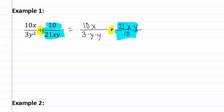We can now reduce. There is a ten in both the numerator and the denominator. There is also a y in both the numerator and the denominator. If I look at twenty-one and three, I know that three goes into twenty-one seven times and three goes into three once.